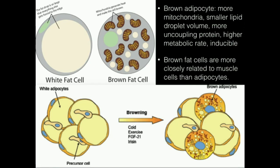A brown fat cell is very different — brown fat cells have a lot of mitochondria. They have multiple fat droplets, but the droplets are very small. Brown fat cells don't necessarily store a lot of fat; that's really not their function. They have a lot of mitochondria, and those mitochondria contain a lot of uncoupling protein. Because they have more mitochondria, brown fat cells have a much higher metabolic rate, since mitochondria are responsible for higher-level metabolism, more so than glycolysis.